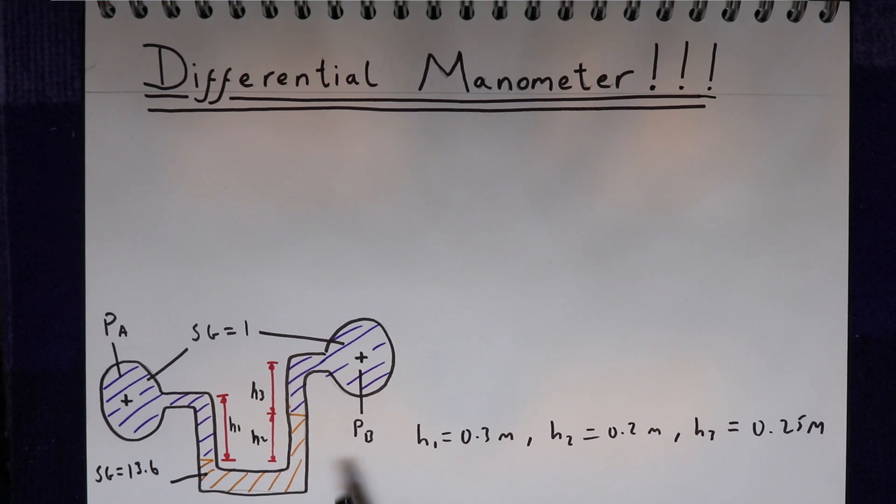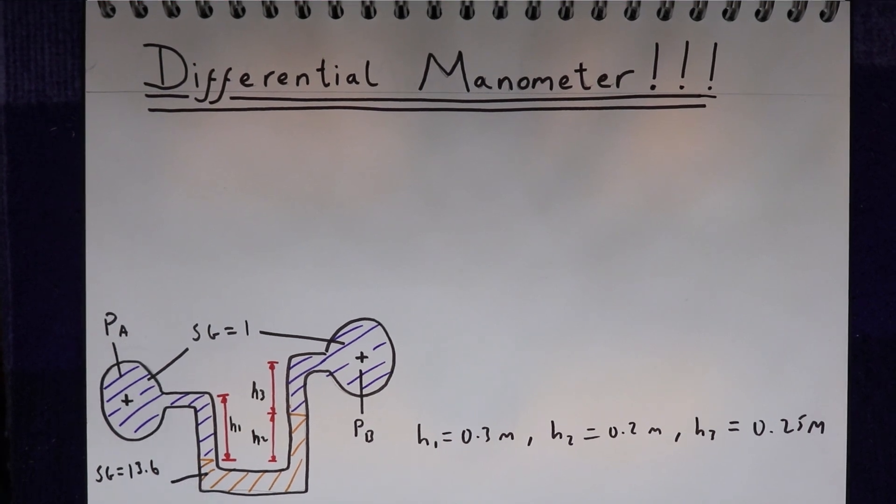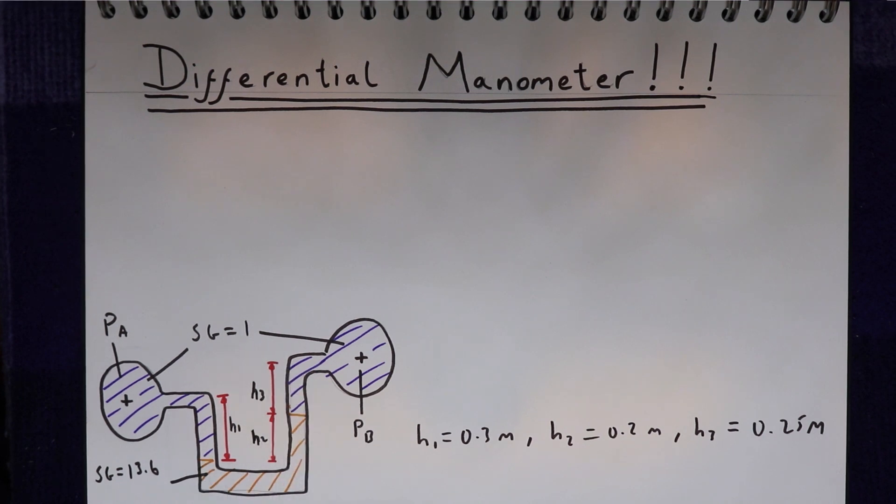Or finally, if we don't know either of the pressures Pa or Pb but we do know the heights of the liquids, we can then work out the difference between Pa and Pb. And that's what we have in this example. So H1 is 0.3 metres, H2 is 0.2 metres, and H3 is 0.25 metres.